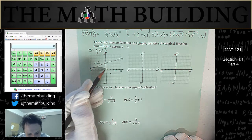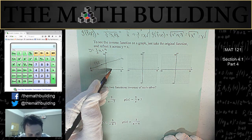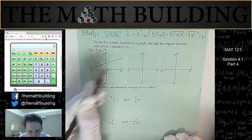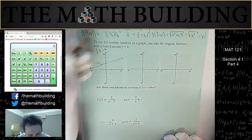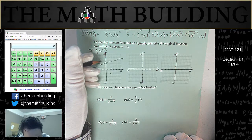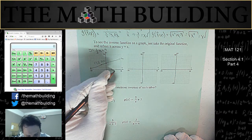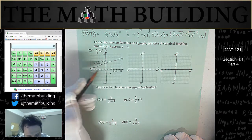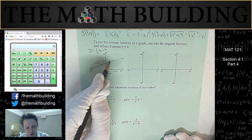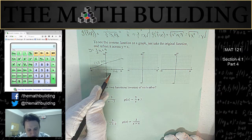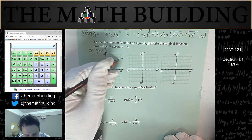So here is the point 0 comma 4. So that means 4 comma 0 would be on our inverse function. There's the point 0, 4 which corresponds to 4, 0. And you notice that instead of the slope being up 1 over 3, it kind of is up 3 over 1.